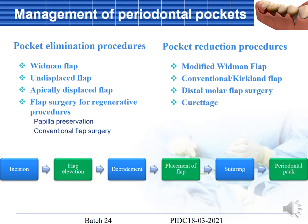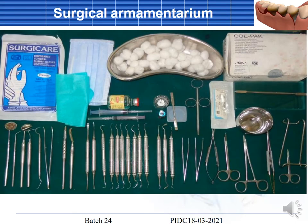There are two basic procedures: pocket elimination and pocket reduction. Pocket elimination procedures will be covered in the next class; this class concentrates on pocket reduction procedures. For any surgical procedure, the order is: incision, flap elevation, debridement, placement of flap, suturing, and periodontal pack.